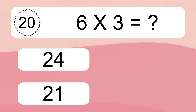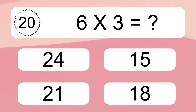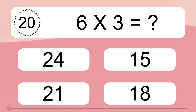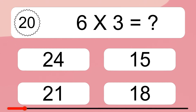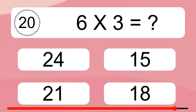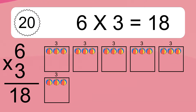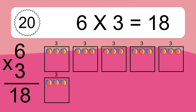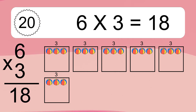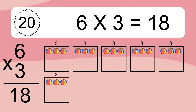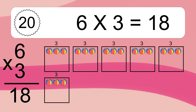Six times three equals what? Six times three equals 18. We have six boxes and each box has three colorful balls inside. If you count all the balls in all the boxes together, you will have six times three balls. This equals 18 balls.